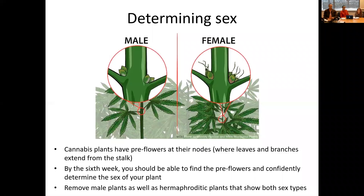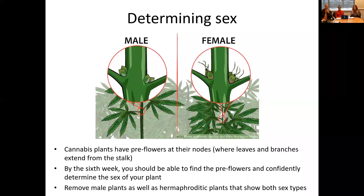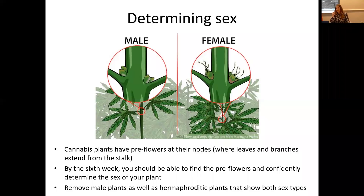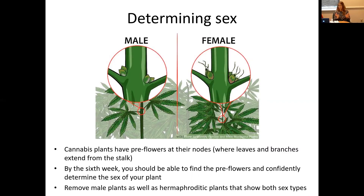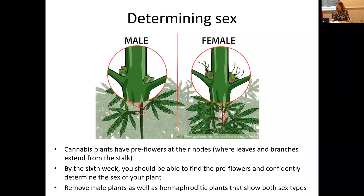A little lesson on determining the sex of your plants: cannabis have these things called pre-flowers, which can be found at the node of the plant — where the stalk is and where the branches extend from the stalk. In that little node, you can identify male and female pre-flowers. In the female pre-flowers, there are pistils protruding, which look like little white hairs. Typically, by the sixth week after planting, you should be able to identify those female pre-flowers. You want to get rid of your males — anything not showing a female pre-flower. It could be a male, or hermaphroditic. You're not going to get a lot of CBD if you allow those in your field.